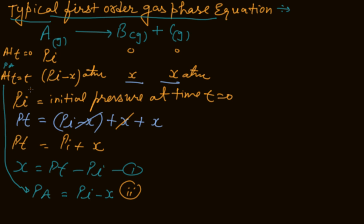Now at time T, the concentration of A is represented by PA. PA equals Pi minus X. Now put the value of X from equation 1 into equation 2. You see what you are getting?